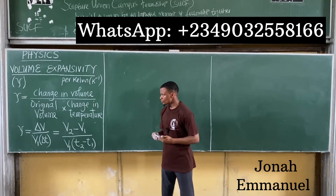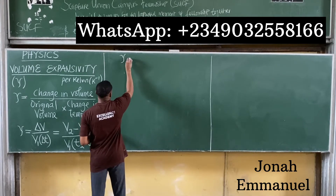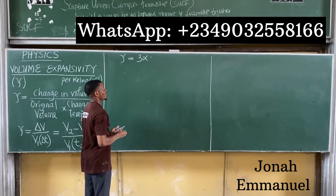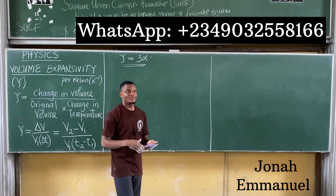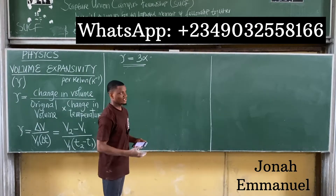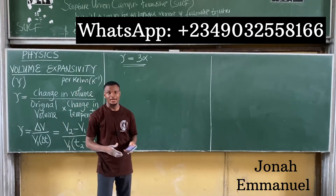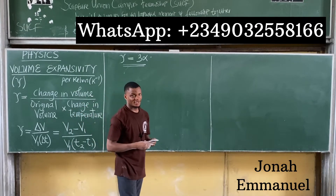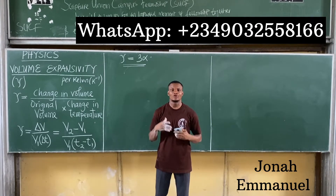Also note that volume expansivity γ equals 3 times linear expansivity α. We said in the last class that area expansivity β is 2 times linear expansivity; now volume or cubic expansivity is 3 times linear expansivity. With these things in mind, let's take some sample problems and solve them together.